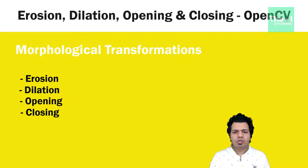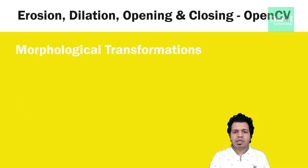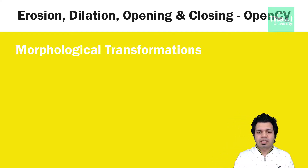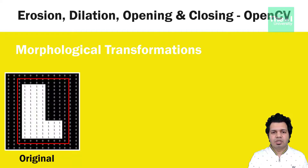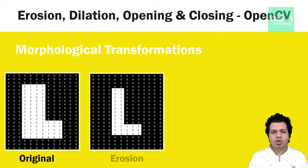Erosion is just like soil erosion — it erodes away the boundaries of a foreground object. Consider an image of the letter L where white portions are represented by 1 (or 255 in OpenCV standard), and the black background is represented by 0. What erosion does is remove pixels at the boundaries of an object. So if we remove the boundaries of the letter L, the letter will become thin after erosion.